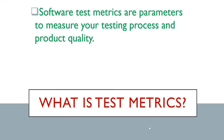So what is test metrics? Software test metrics are parameters to measure your testing process and product quality. We know testing plays a very important, significant role in software development. The process you are applying to test your software — your quality process — is it good or bad? And at the end, is the product you are delivering also good or bad? To define and measure those things, we need test metrics.